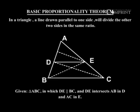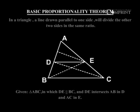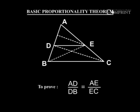Given: Triangle ABC in which DE is parallel to BC, and DE intersects AB at D and AC at E. To prove: AD/DB = AE/EC.